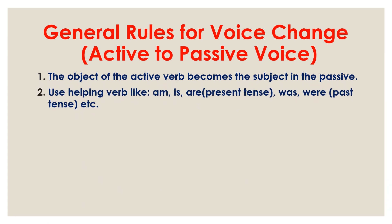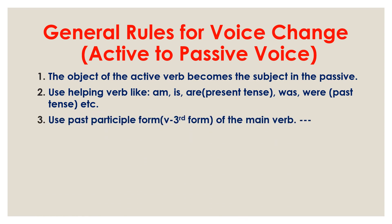Second, use a helping verb. Helping verb means am, is, are in the present tense, and was, were in the past tense. Third, use the past participle form — that is, the third form of the main verb.